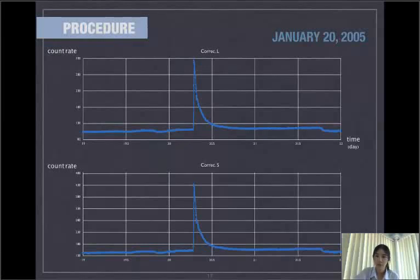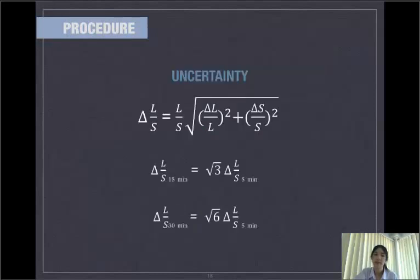And these are from 2005. The solar storm event is on 20th of January. And after that we will find the uncertainty by using this equation.